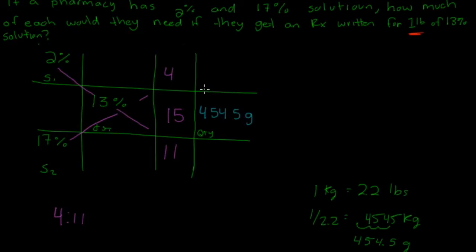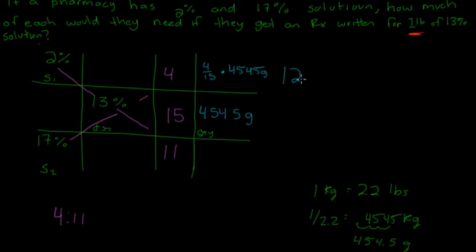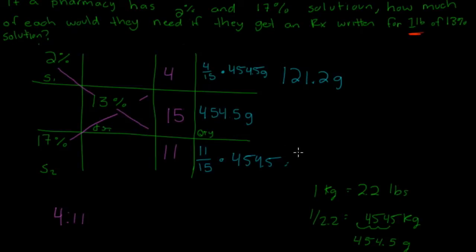This is where it gets a little tricky. We do 4 divided by 15 times 454.5 grams — dividing by the total quantity — which gives us 0.2667 times 454.5, equaling 121.2 grams. Then we do 11 divided by 15 times 454.5, which gives us 333.3 grams.